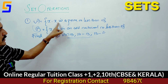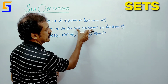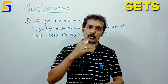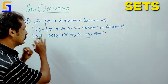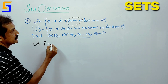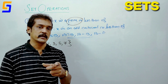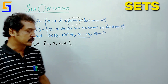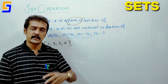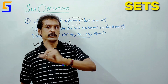Let's try an example. A equals the set of x such that x is a prime number less than 10. B equals the set of x such that x is an odd natural number less than 10. We will find these sets in set-builder form. A is equal to {2, 3, 5, 7}.